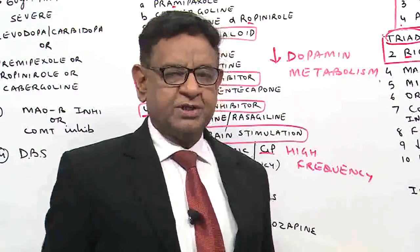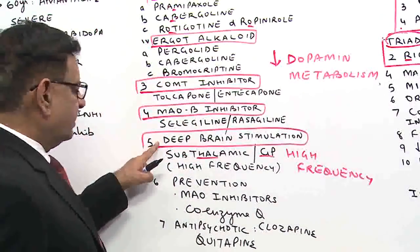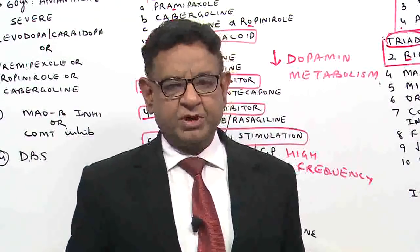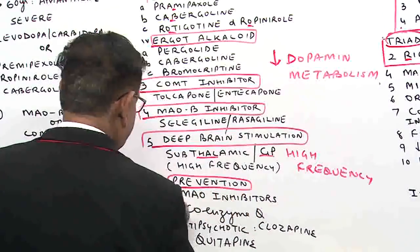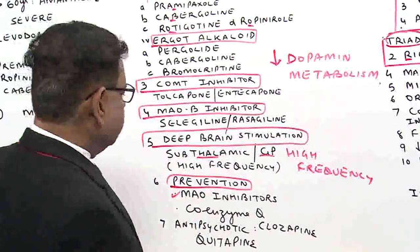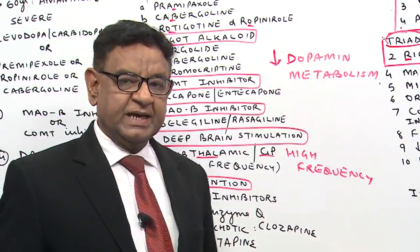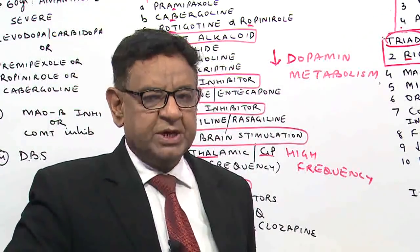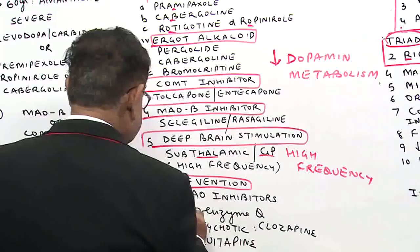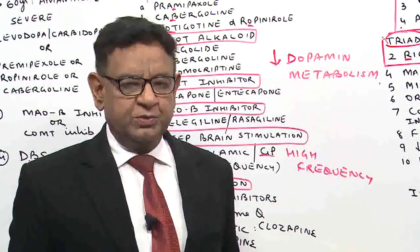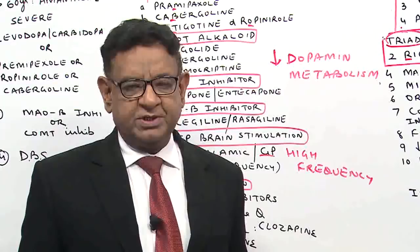A new technique is deep brain stimulation, where we give high-frequency stimulation to the subthalamic nucleus or globus pallidus. This can slow down the progression of Parkinson's or may even have some reversal effect. This is the latest treatment discussed at conferences and is very important from an exam standpoint. For prevention, MAO-B inhibitors — selegiline or rasagiline — have some preventive action and can slow down progression if used in the early stages. Coenzyme Q, used in the early stage of Parkinson's, can also slow down progression a bit.